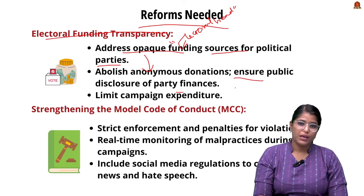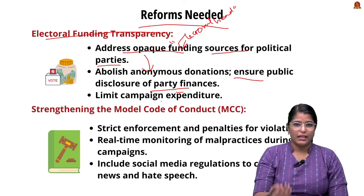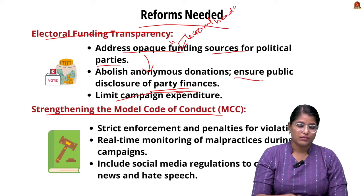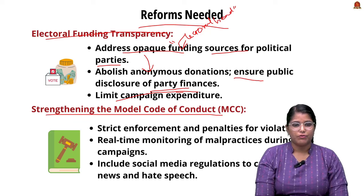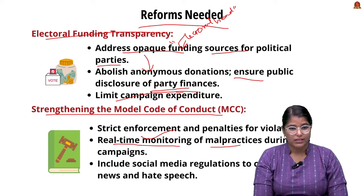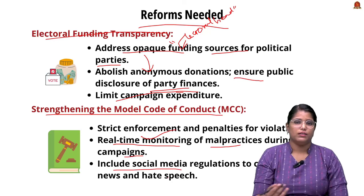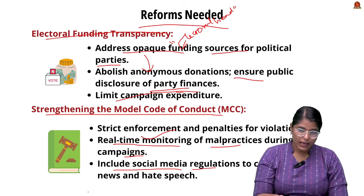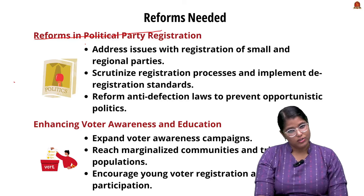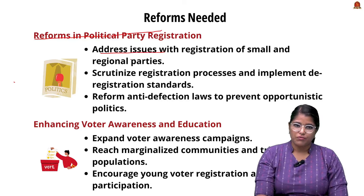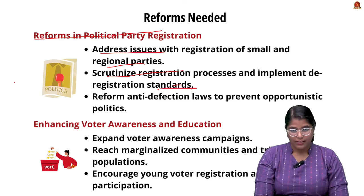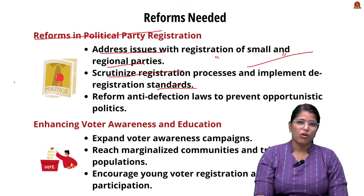Following this, public disclosure of party finances should be ensured and campaign expenditure limited. The second important reform is strengthening the Model Code of Conduct — enforcing strict penalties for violations, real-time monitoring of malpractices during campaigning, and including social media regulations to curb fake news and hate speech. Third, regarding political party registration, issues with small and regional parties must be addressed, registration processes scrutinized, and deregistration standards implemented.